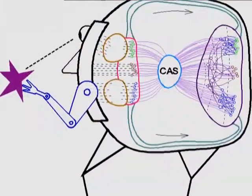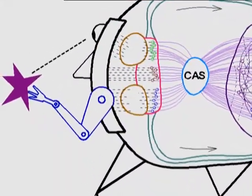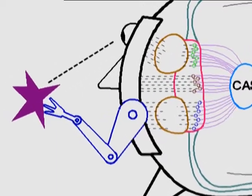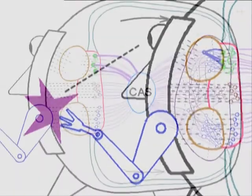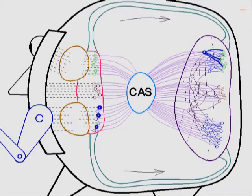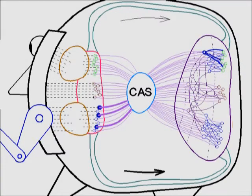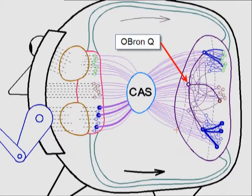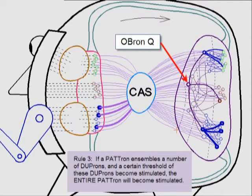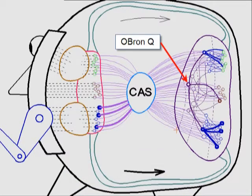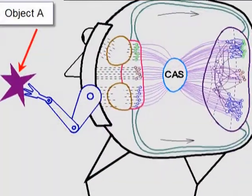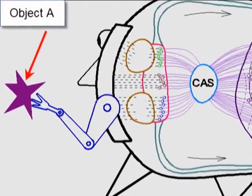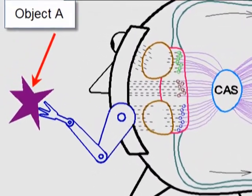From a first-person perspective, this would be equivalent to having a vague notion of familiarity with the way this object looks. Continuing, we'll assume the same thing happens with the tactile primrons and duprons, and that there's a pre-existing Patron Q2 already established from some previous encounter. By reapplying Rule 3 from before, Abron Q has also become stimulated because Patrons Q1 and Q2 are stimulated. From a first-person perspective, this would be equivalent to a vague feeling of familiarity with object A. It would seem inarticulably familiar, but we wouldn't yet be able to place our finger on why.